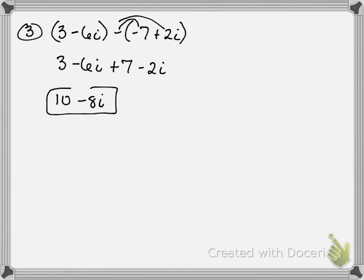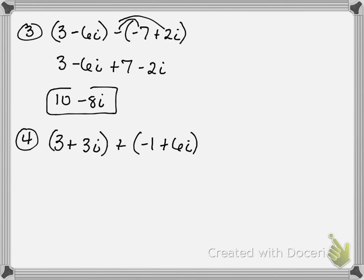Let's look at number 4. So number 4 is 3 plus 3i plus negative 1 plus 6i. So what do I notice — there is no negative that's got to get distributed through. So just take care of your like terms: 3 and negative 1 — what's 3 plus negative 1? Just 2. And then what's 3 plus 6? So your answer is just 2 plus 9i for that one.